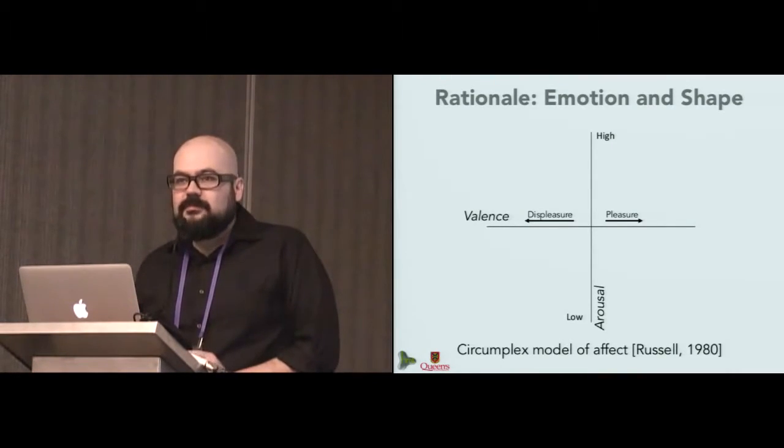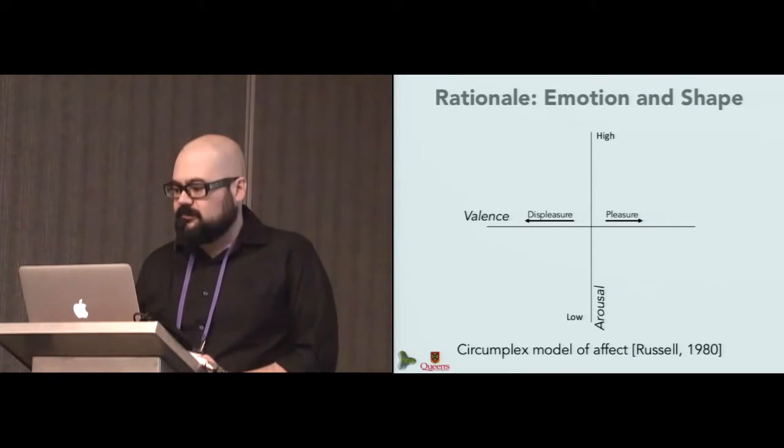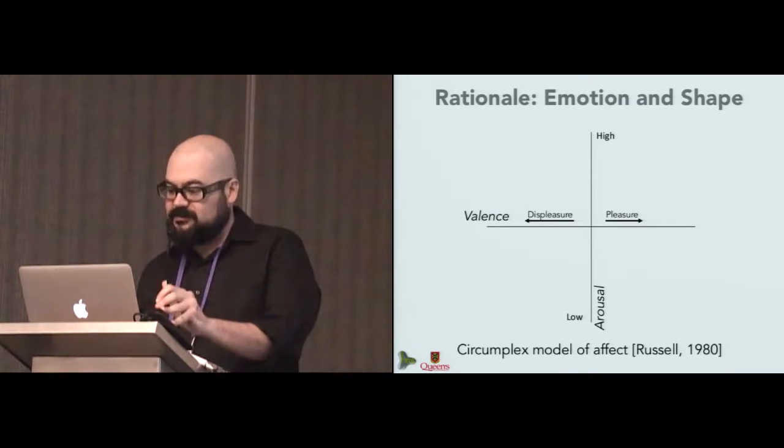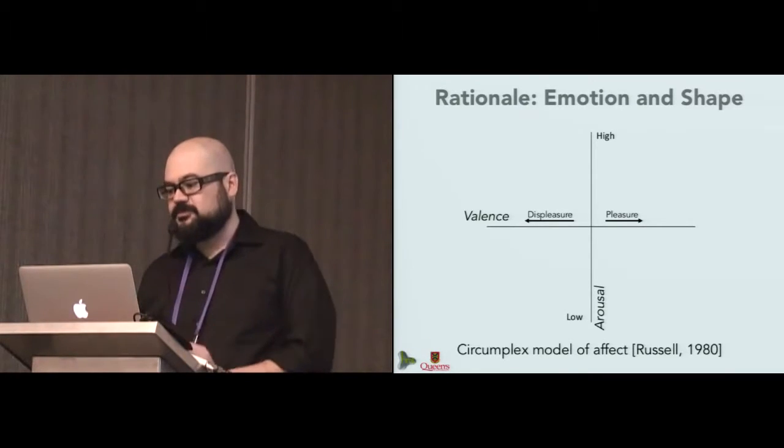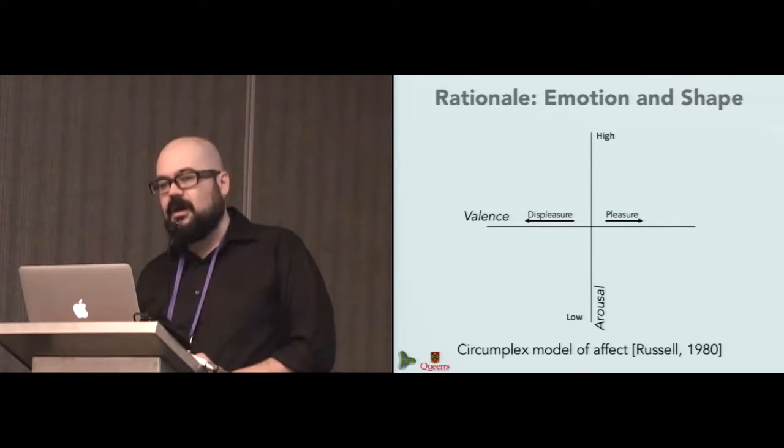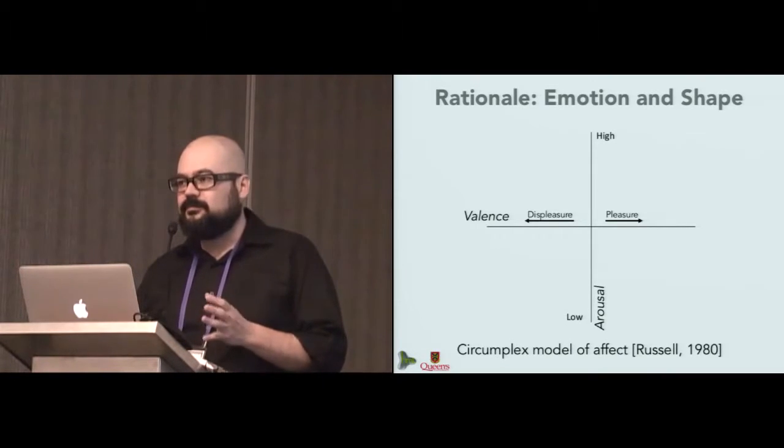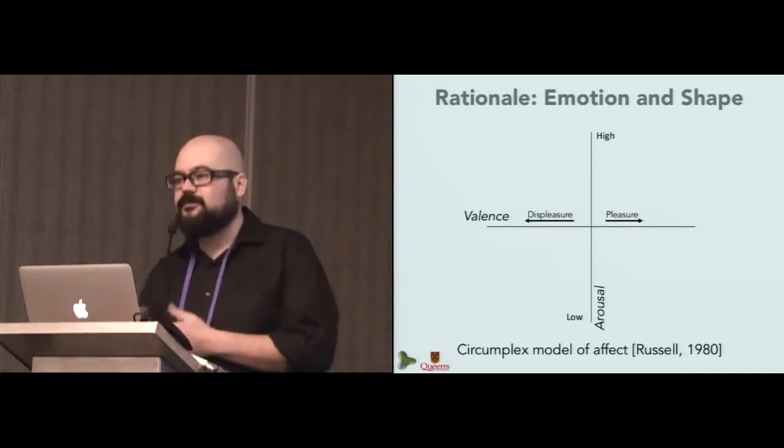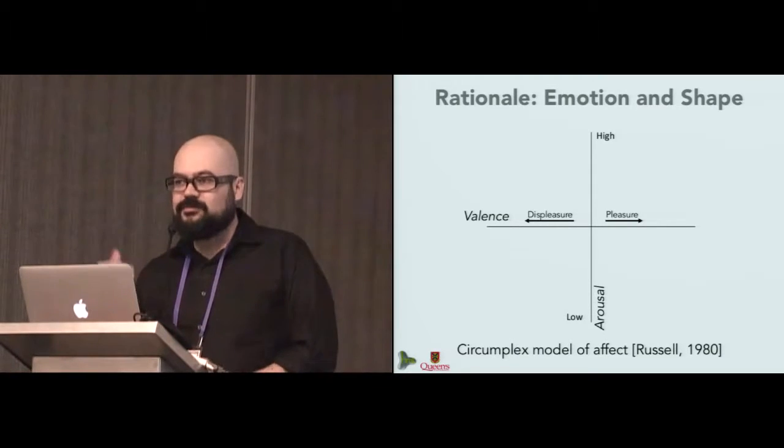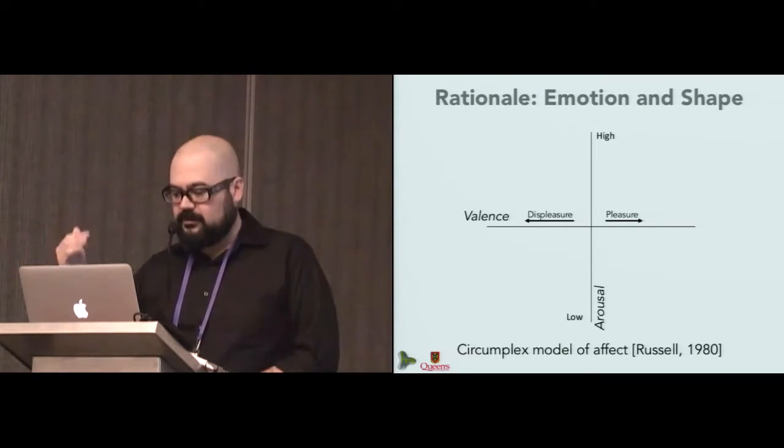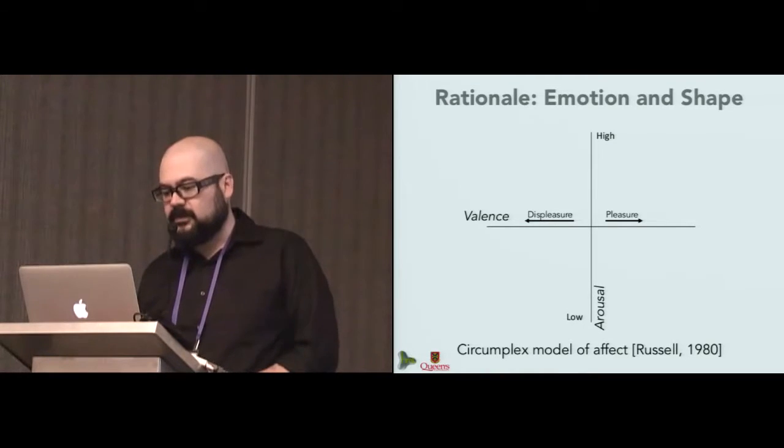In order to study emotion and shape, we used a couple of frameworks. The first one is the circumplex model of effect, which was formulated by Russell in 1980. And what it essentially says is that each emotion is represented in a coordinate system, or could be represented in a coordinate system, according to its valence and arousal. So the valence is the positive or negative quality of an emotion, and the arousal is the intensity, either low or high intensity of the emotion.